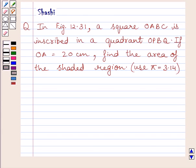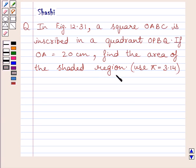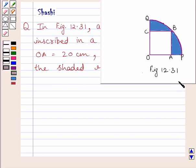Hi and welcome to the session. I am Shashi and I am going to help you with the following question. The question says: in figure 12.31, a square OABC is inscribed in a quadrant OPBQ. If OA is equal to 20 cm, find the area of the shaded region. This is figure 12.31.